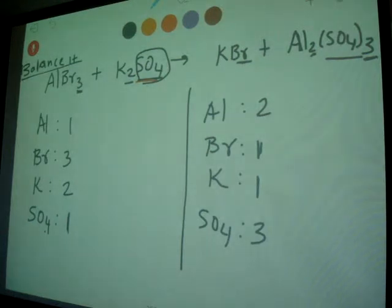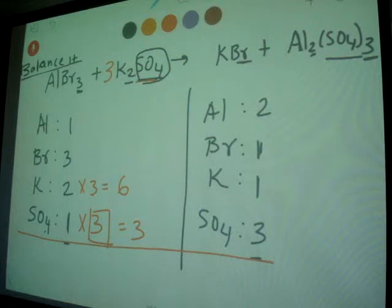So now we start balancing it. When you have this polyatomic ion, let's start balancing it first. We multiply by 3 here, you put 3 here. When you multiply by 3, potassium also going to multiply 3 automatically, it becomes 6. When you try to balance SO4 both sides, potassium becomes 6.